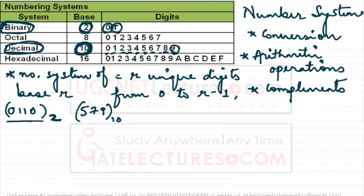Octal is another number system we may use. 'Oct' means 8, so the octal number system has 8 unique symbols: 0, 1, 2, 3, 4, 5, 6, 7. That is why its base is 8.